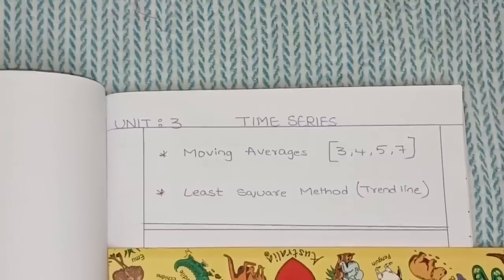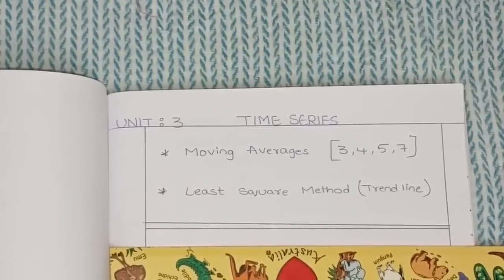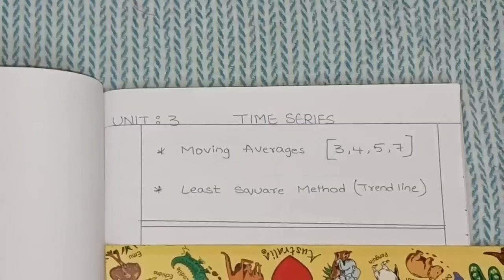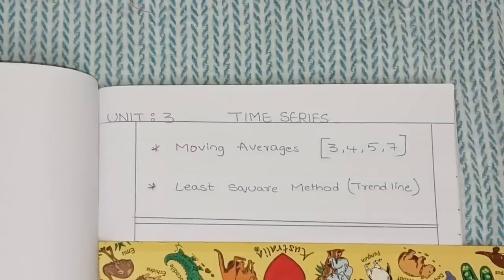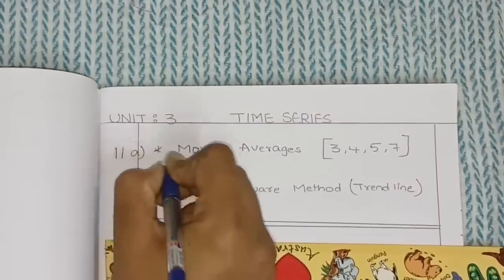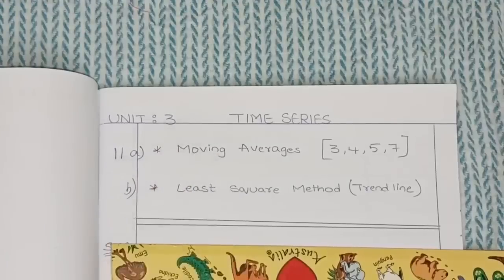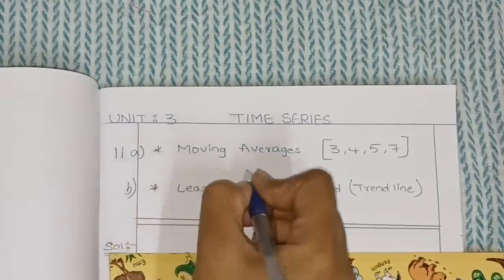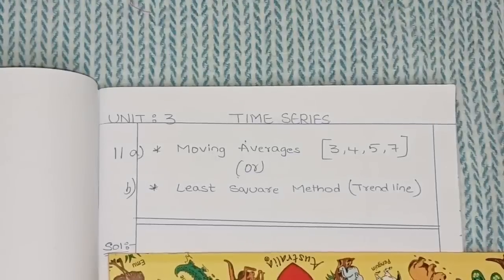Hello all, welcome back to our channel. In unit number three of business statistics 2, we will cover time series. In time series, you will have two methods: the first one is the moving average method and the second one is the least square method. Level A questions will definitely come from moving averages, and level B questions will come from the least square method.